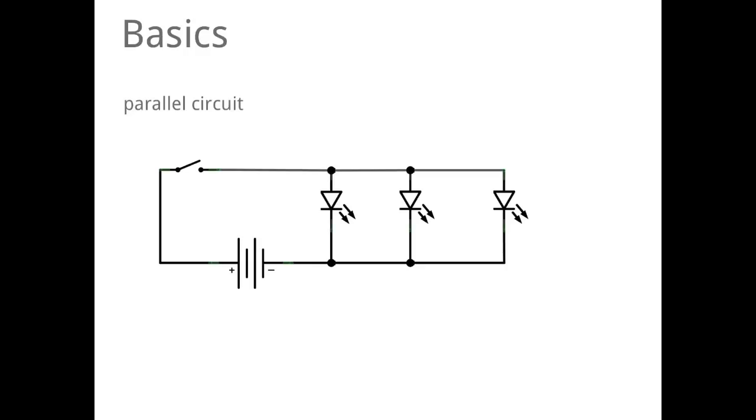The other example or the other possibility for us is a parallel circuit. In a parallel circuit, the parallel circuit is even called the current dividing circuit, which means that if each LED here lets 20 milliamps through, the whole amount of current in the circuit will be 60 milliamps. The voltage is everywhere equal.